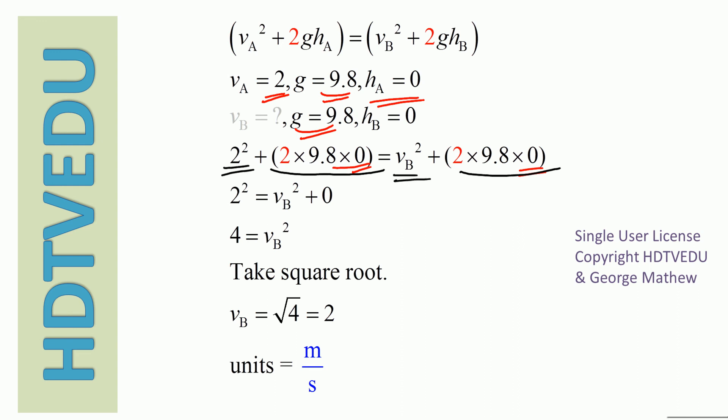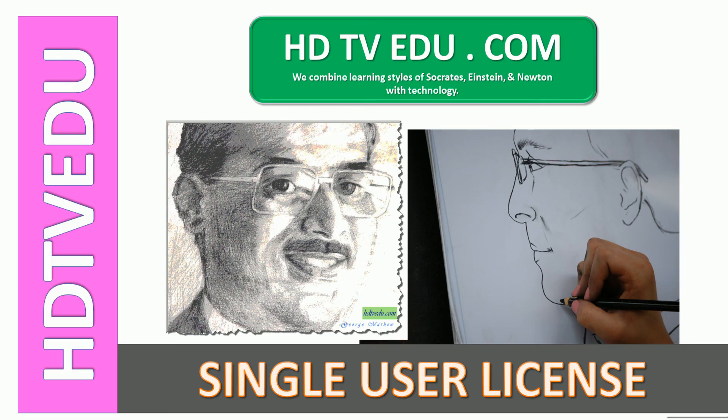So 2 squared equals 4, and 4 equals Vb squared. Taking the square root of both sides gives us Vb equals 2 meters per second. And this is George Matthews signing off — good luck.